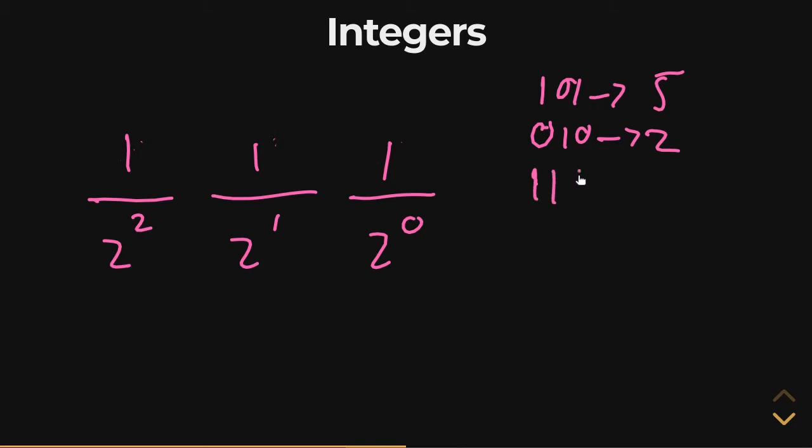So the largest number you can get in three bits, three-bit ints is seven. The smallest number is zero, zero, zero, which is just zero. That one makes a lot of sense.